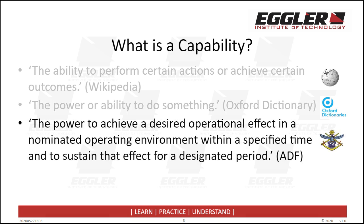The ADF definition says that capability is the power to achieve a desired operational effect in a nominated operating environment within a specific time, and to sustain that effect for a designated period. The military definition introduces three important additional factors: the first relates to the capability effect being delivered in a particular operational environment, which can be in the land, sea, or air domain. It also introduces two temporal constraints — delivering the capability effect within a specified time, and then being able to sustain that effect over a set period.